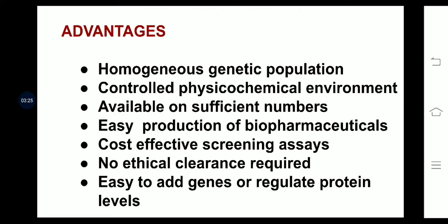Coming to the advantages of animal cell culture: homogeneous genetic population — all the cells are genetically identical. Control of the physico-chemical environment — physical parameters like temperature, pH, osmolarity, etc., can be controlled. It is available in sufficient numbers; we can produce it in large quantities. Easy production of bio-pharmaceuticals — any biological compounds which are active and of therapeutic value can be produced very easily through animal cell culture. Cost-effective screening assays — we can screen a number of animal cell cultures at the same time.